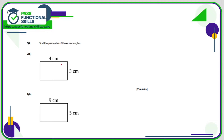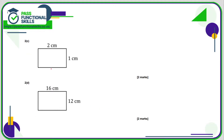The perimeter of the rectangles: 3 plus 4 plus another 3 plus another 4, so 8 plus 6 is 14 centimetres. This side is 9, this side is 5: 9 plus 9 is 18, plus 10 is 28 centimetres. This side is 2, this side is 1, so 6 centimetres. This side is 16, this side is 12: 2 sixteens are 32, plus 24 is 56 centimetres.